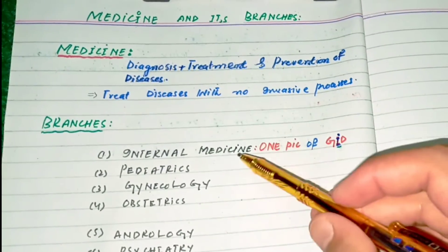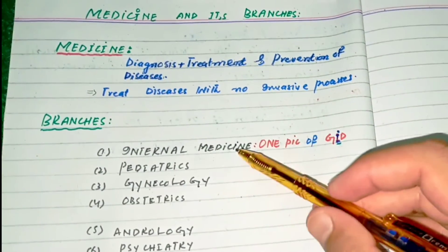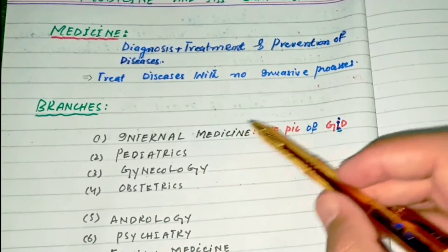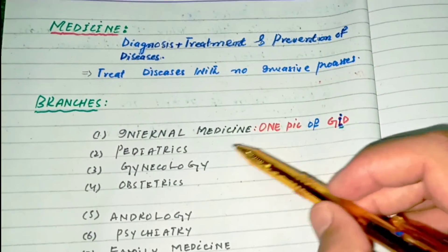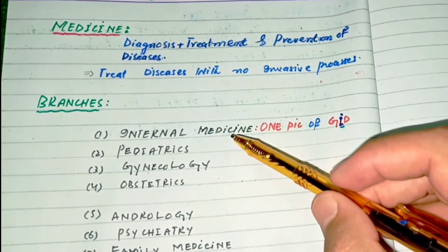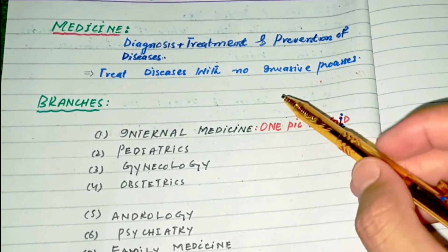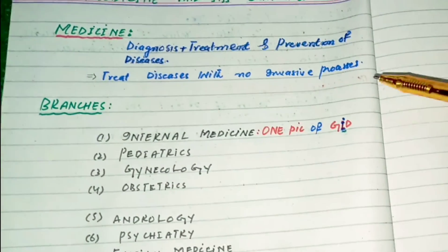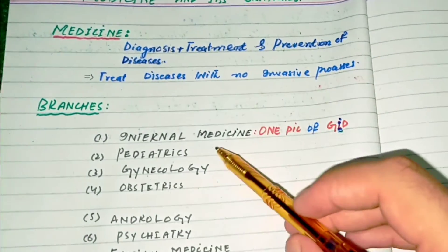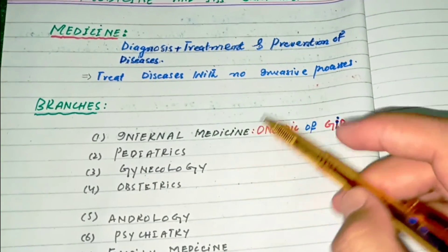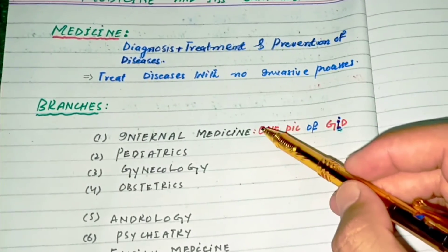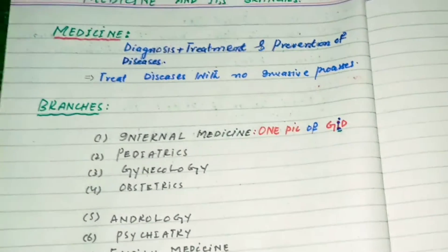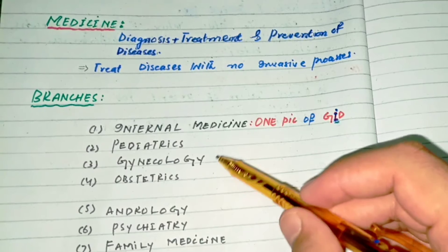In pediatrics, we study, diagnose, and treat disease only in children whose age is between 0 and 19 years. Pediatrics also has subspecialties like pediatric oncology, pediatric nephrology, pediatric endocrinology, and others. In gynecology, we only study diseases of women — diseases which are related to women are mainly studied in gynecology.